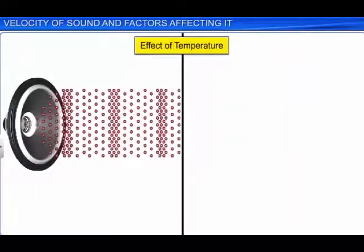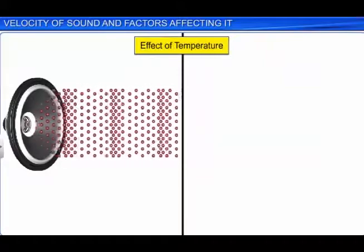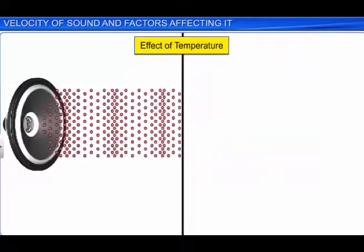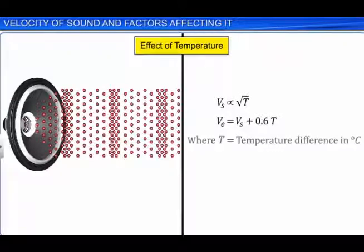Now let us see how temperature affects the speed of sound in air. The speed of sound in air is directly proportional to the square root of the absolute temperature of air. The speed of sound in air increases by about 0.6 meters per second for every 1 degree rise in temperature.